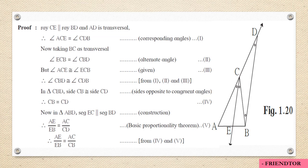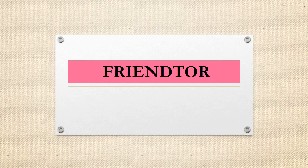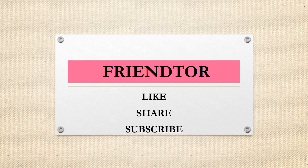Try writing this proof by yourself — first understand from the video, then do the construction and write the statements. There is also an alternate proof for this theorem, which I will discuss in the next video. Thank you for watching. If you're new to my channel, please subscribe, like the video, and share it with your friends. See you soon with the alternative proof of the angle bisector property of a triangle.